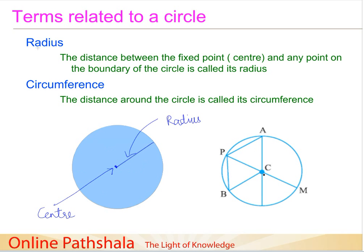Let us take this figure. We have a circle with center C, and we have located a few points on the circle: point A, point B, and point M. The line segments AC, CP, CB, and CM — and even CD — are all of the same length, equal to the radius of the circle. Any line from the center to any point on the circle will always be of the same length and is known as the radius.